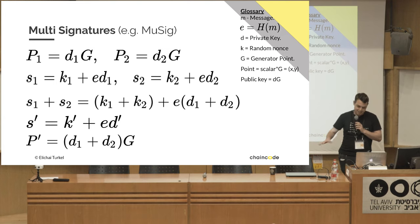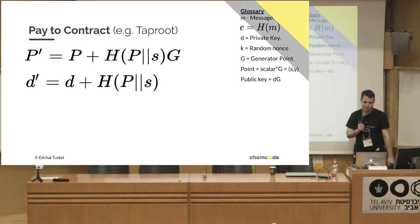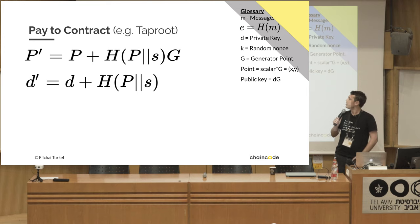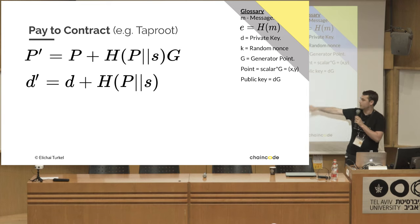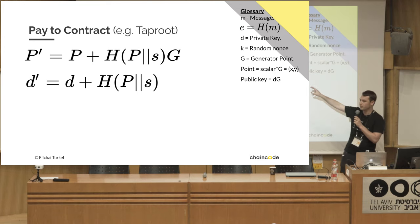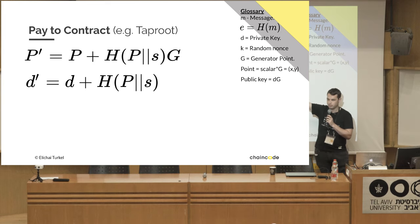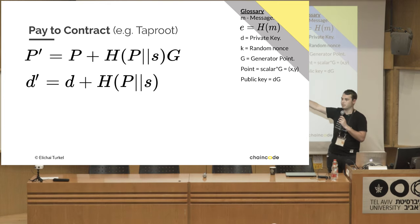So they can add up the public keys, get P-prime, sign separately, add the signatures, and get a signature valid for P-prime — which is pretty awesome. Moving to pay-to-contract: if we take our public key and add to it a hash of a commitment multiplied by the generator, we can add the resulting point, and do the same for the private key to get P-prime and D-prime.